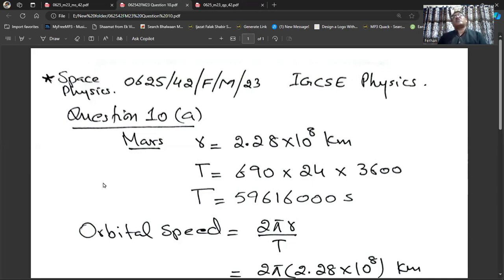In 690 days, each day has 24 hours and each hour has 3600 seconds. So, 690 multiply 24 multiply 3600. That gives you 59,616,000 seconds. This is the orbital period in seconds.